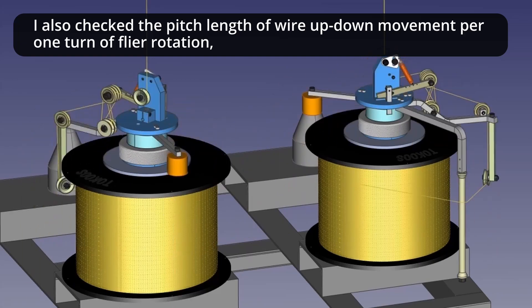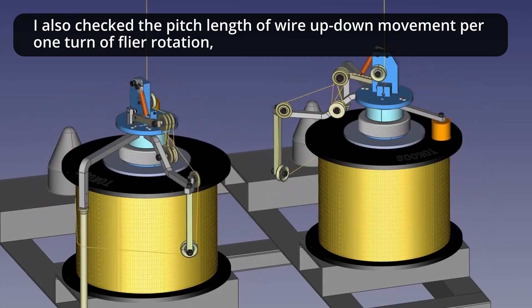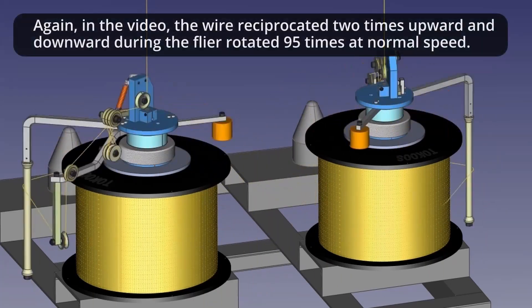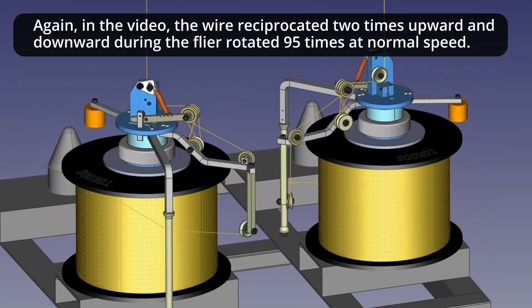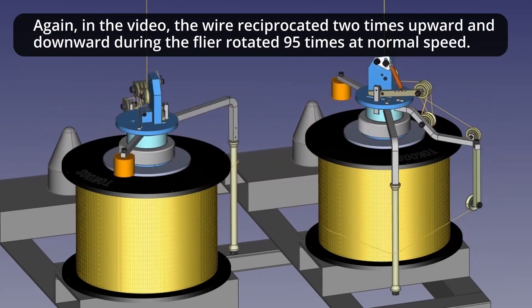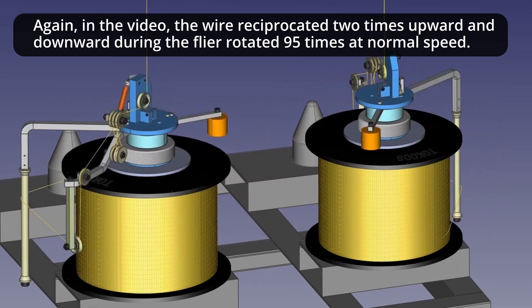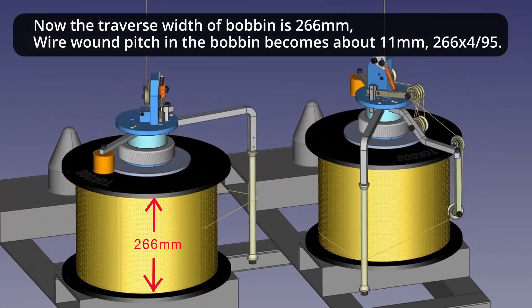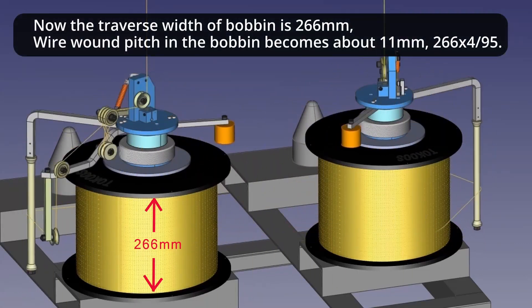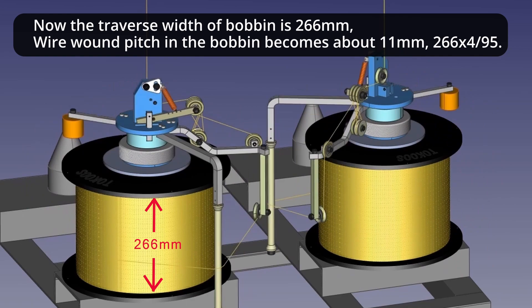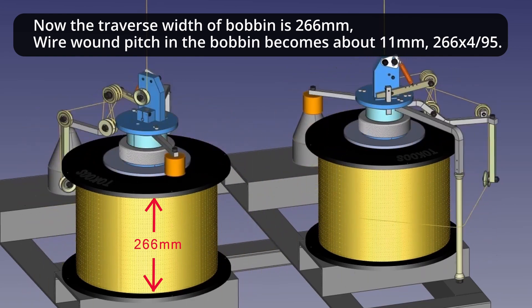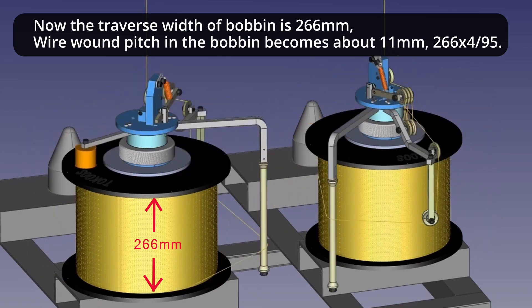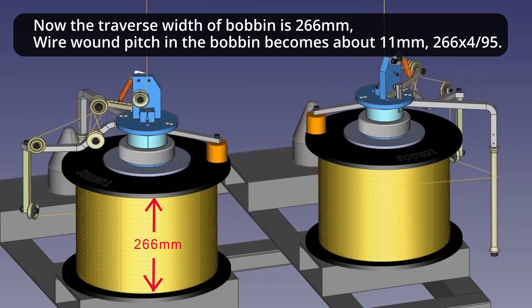I also checked the pitch length of wire up-down movement per 1 turn of flyer rotation. Again, in the video, the wire reciprocated 2 times upward and downward during the flyer rotated 95 times at normal speed. Now the traverse width of bobbin is 266 millimeter. Wire wound pitch in the bobbin becomes about 11 millimeter, that is, 266 times 4 divided by 95.